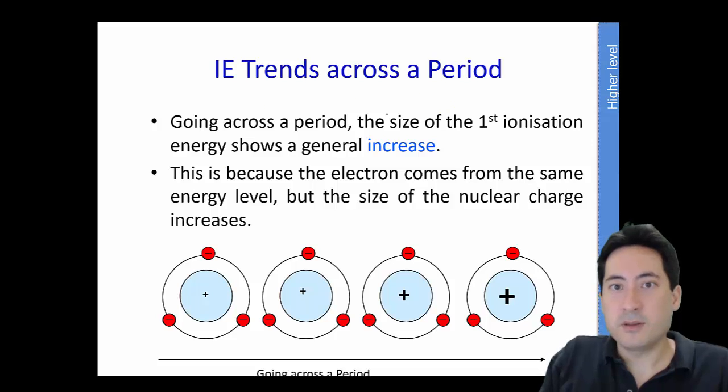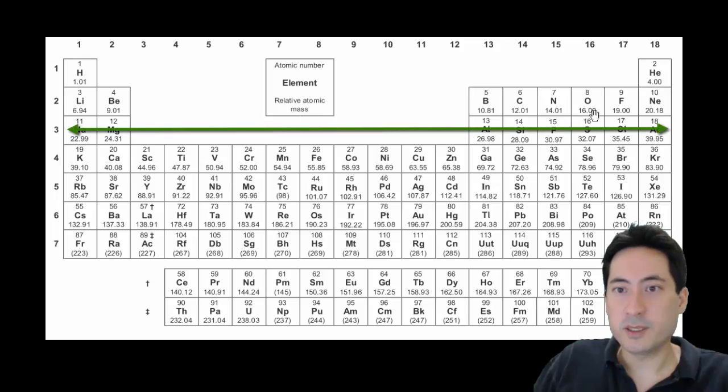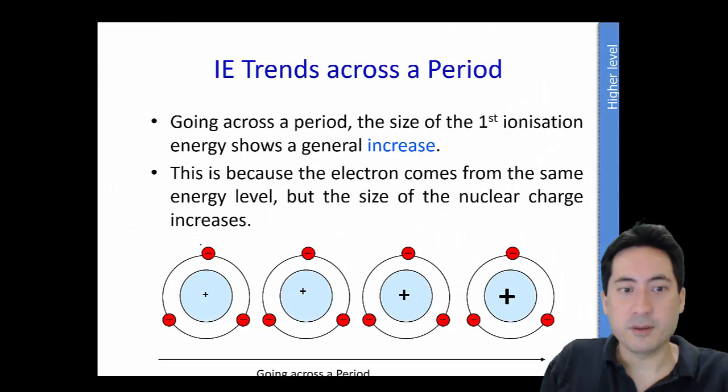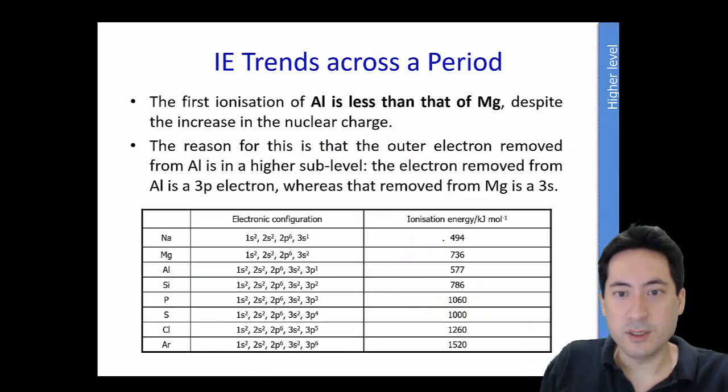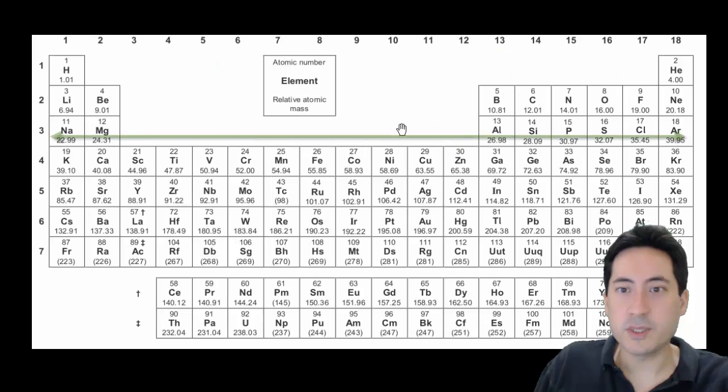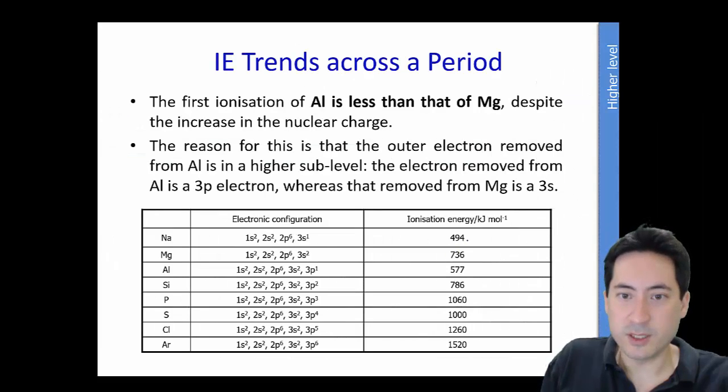So now we're getting close to the next unit, ionization energy. So as you go along here, along the periodic table, they're all in the same main energy level. So they're all in the same shell. But what you're going to have is the protons are gradually increasing. And so the nuclear charge is increasing. And so the first ionization energy, the attraction is getting stronger and stronger, and the distance is the same. So here we have the actual values here.